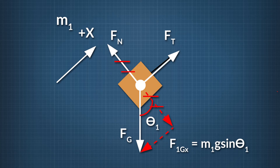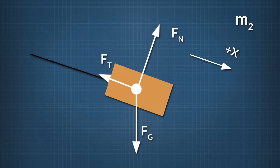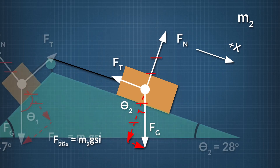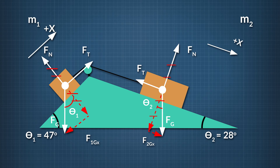Now let's take a closer look at Block 2's free-body diagram. Just like Block 1, the normal force acts perpendicular to the surface, tension acts parallel and up the incline, and gravity acts at an angle to the incline. There's a component of gravity that acts down the incline in the positive x direction. That component, f sub 2 gx, equals m2 times g times the sine of theta 2. When we consider the system of Blocks 1 and 2 together, these forces along the plane are the only ones that cause the system to accelerate in the x direction.